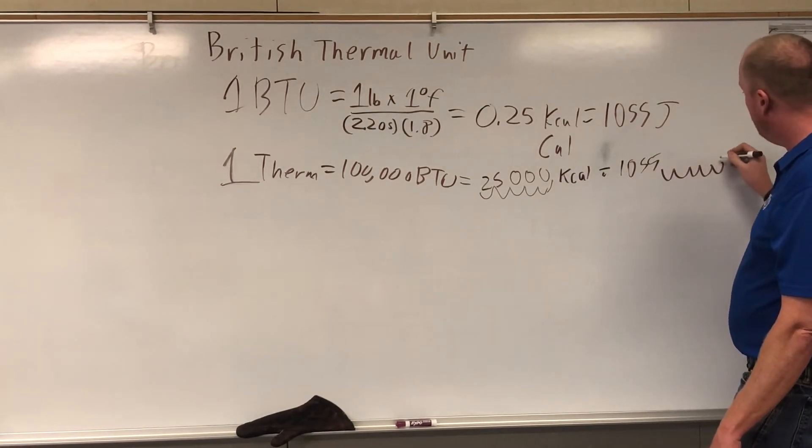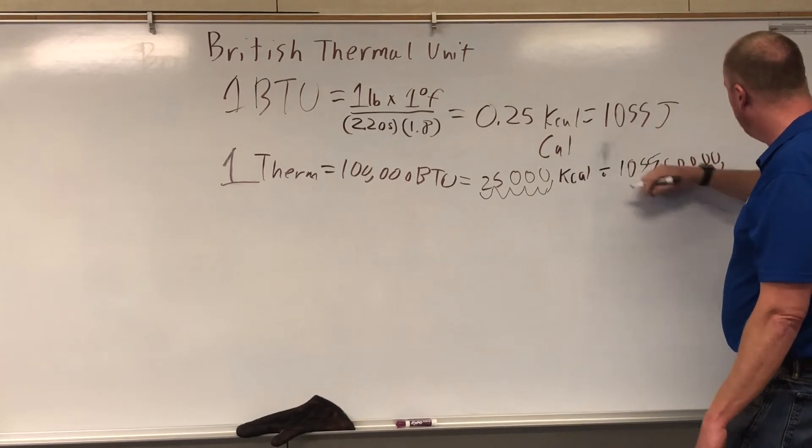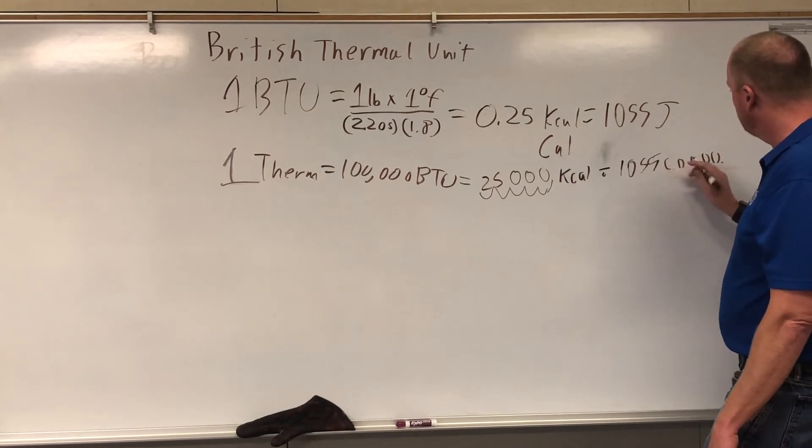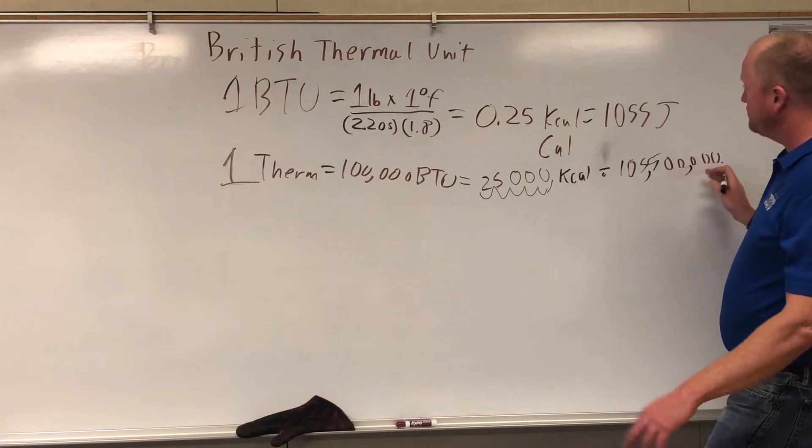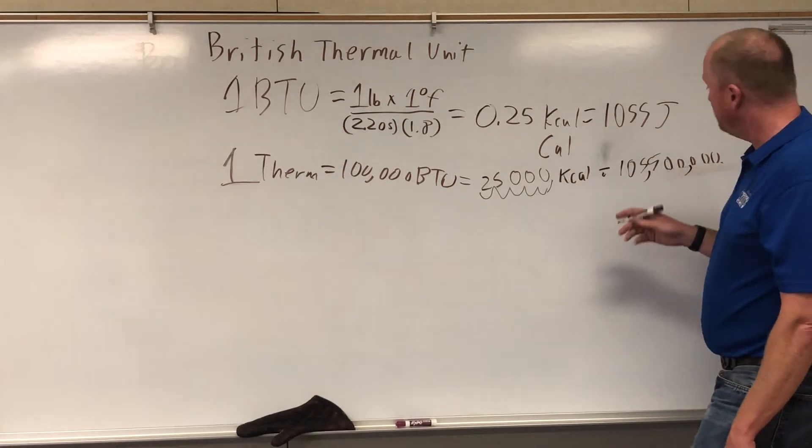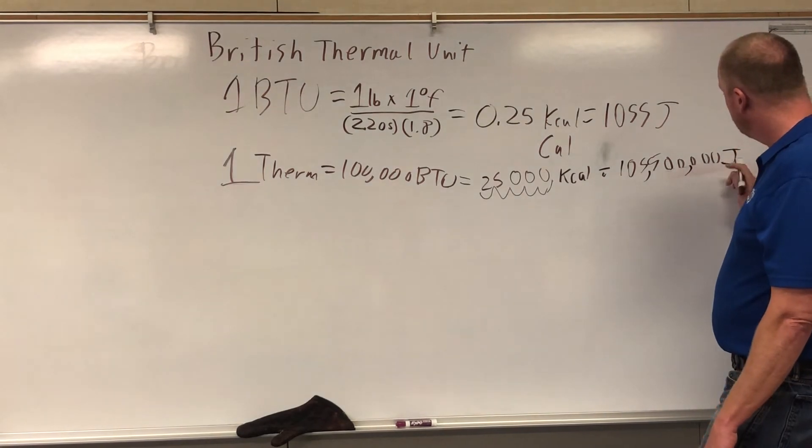1, 2, 3, 4, 5. And we find that - boy, is that messy - 105,000,000 joules is roughly how many joules in a therm.